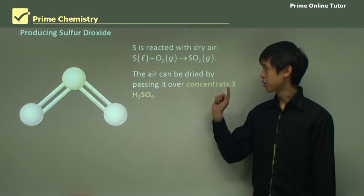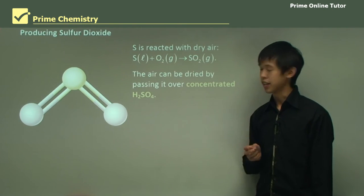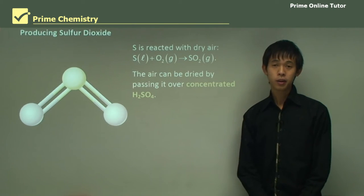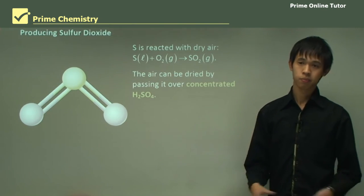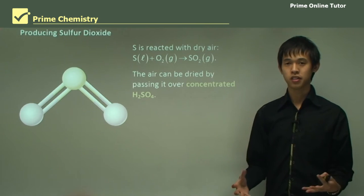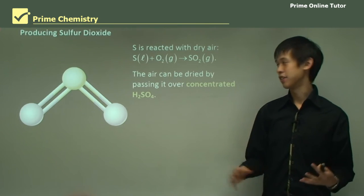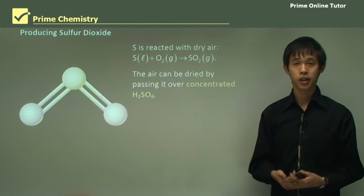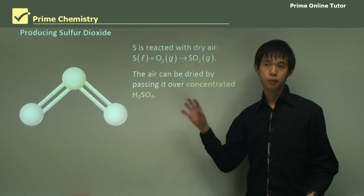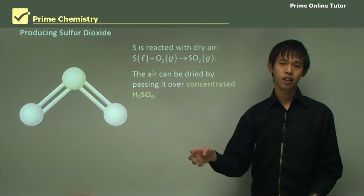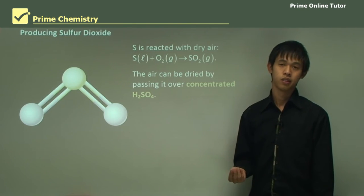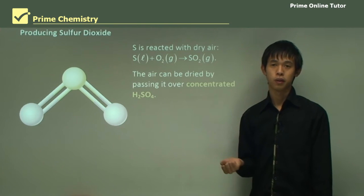The air can be dried by passing it over concentrated H2SO4. There are many ways to dry air industrially, but assuming that we're already producing this sulfuric acid, we might as well use it in our process. If we pass the air over the sulfuric acid, it will actually desiccate the air — that is, remove the water from it.